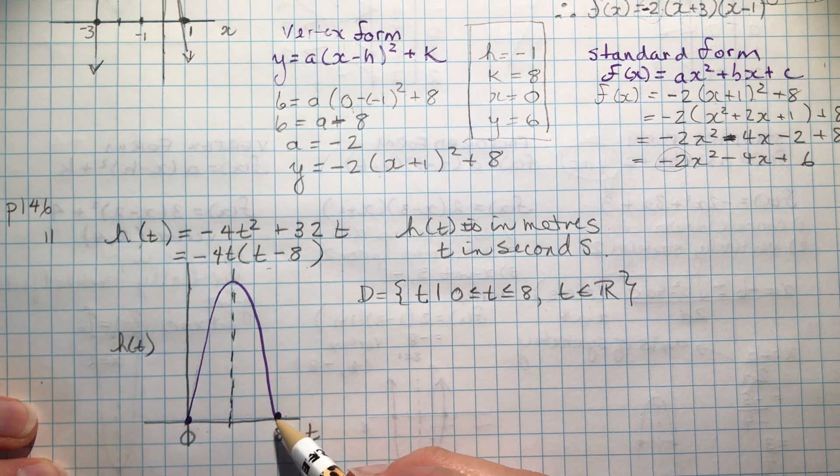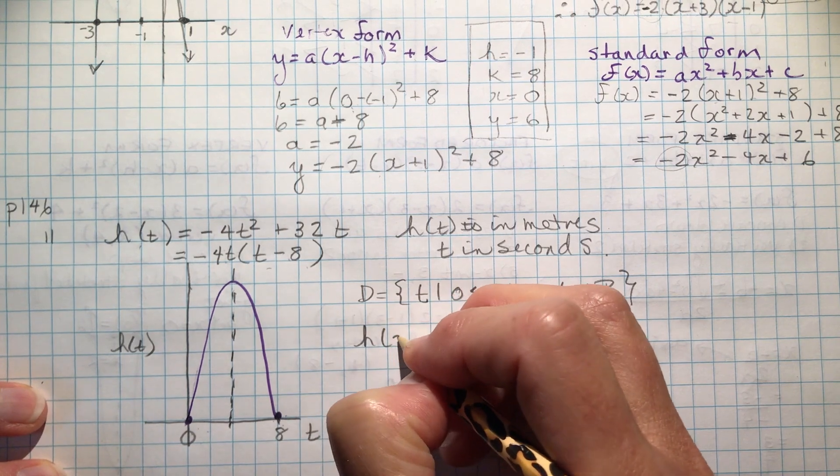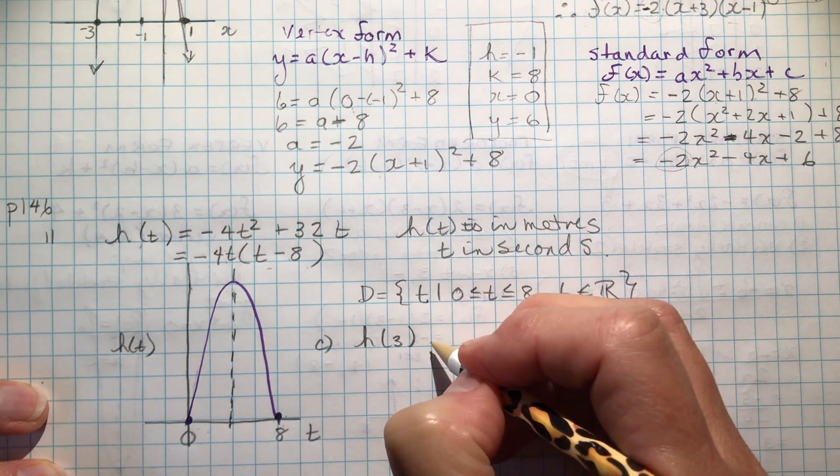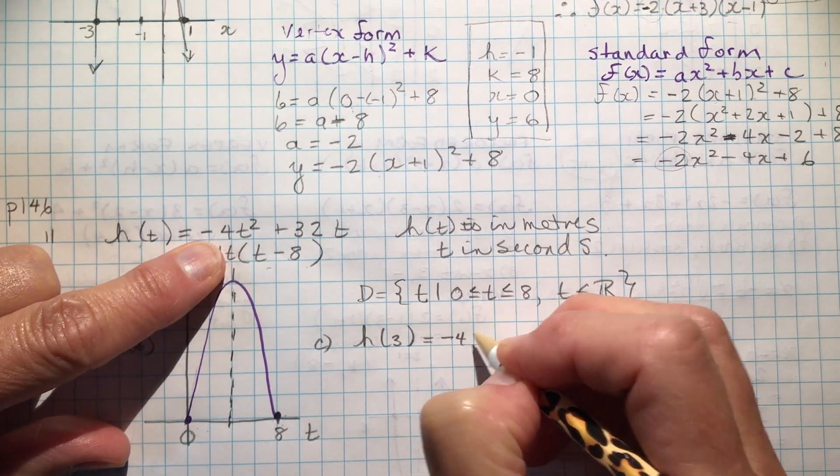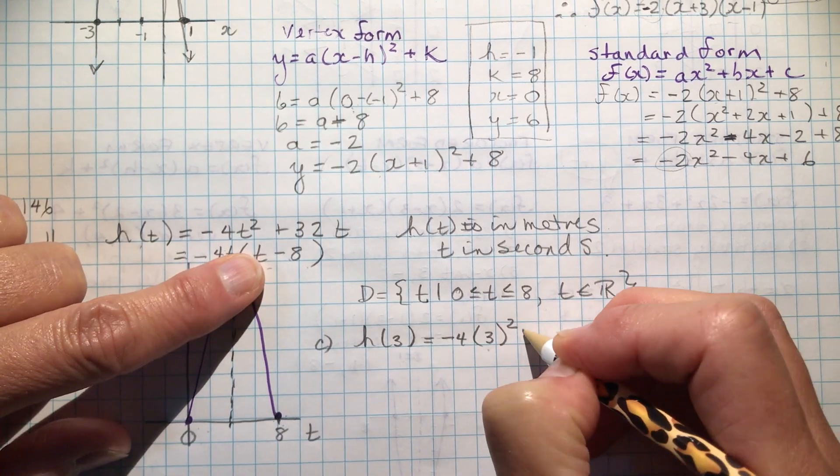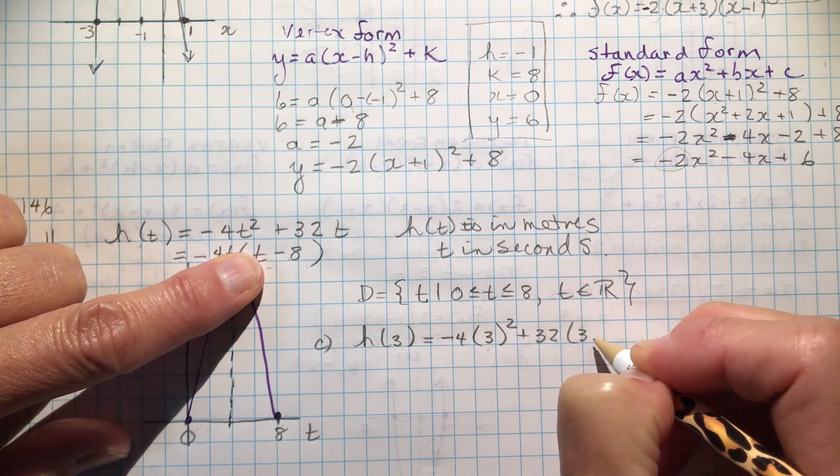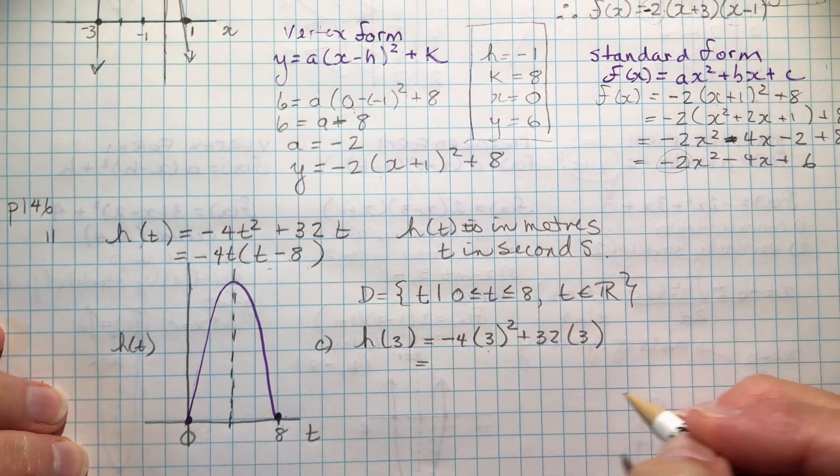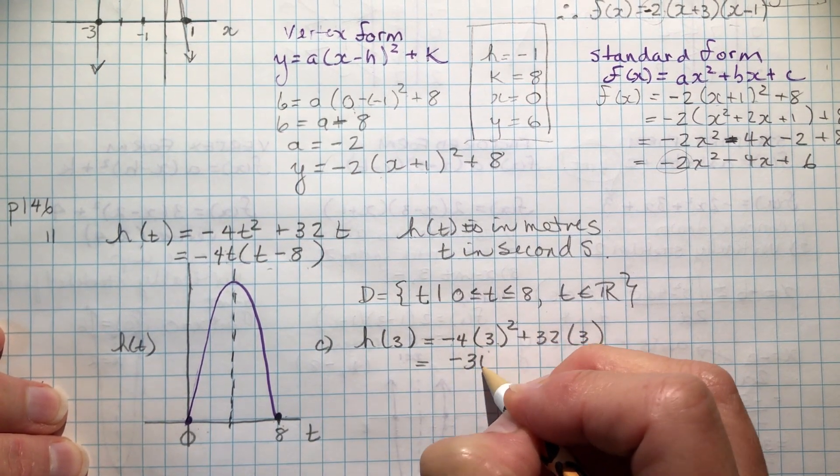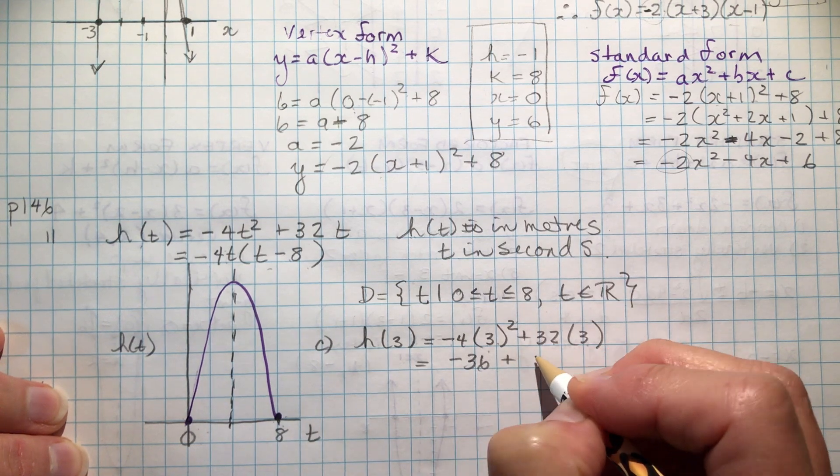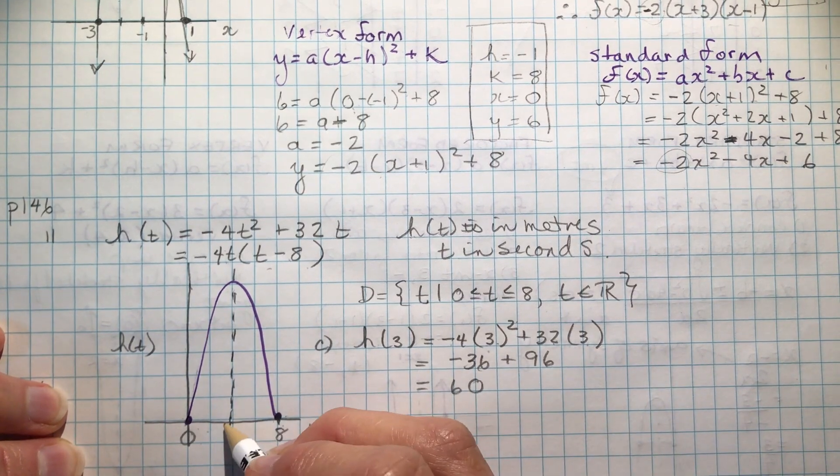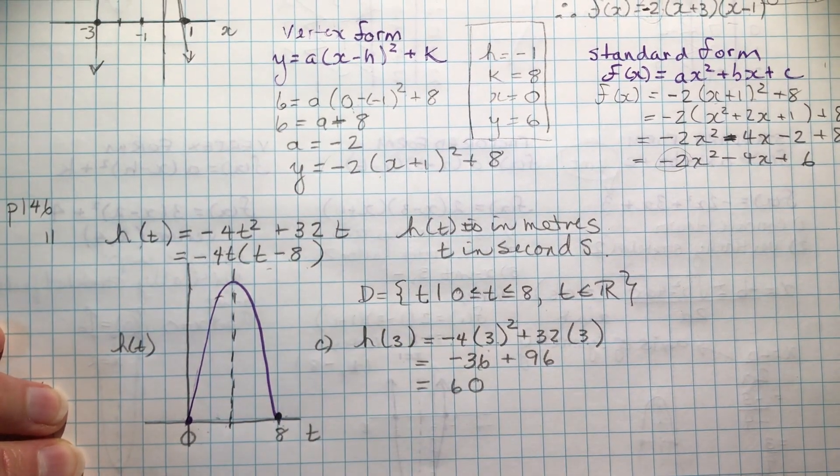How high will the rocket be after 3 seconds? Well, that's h(3). This is part c here. h(3). So where I see a t, I plug in 3. Plug it in carefully. Make sure that you put it in brackets, especially if you're asked for a value that's negative, which wouldn't happen in a word problem like this. So I have 9 times minus 4 is minus 36. And 32 times 3 is 96. And that would give me 60. So at 3 seconds here, this would have to be 60.